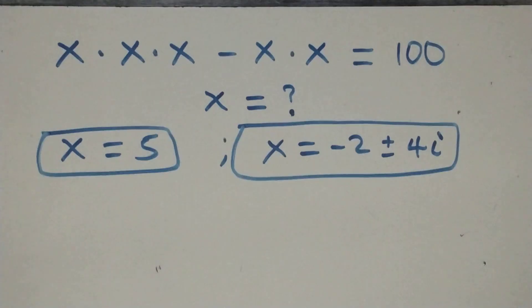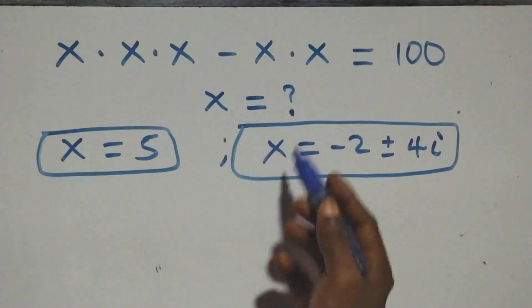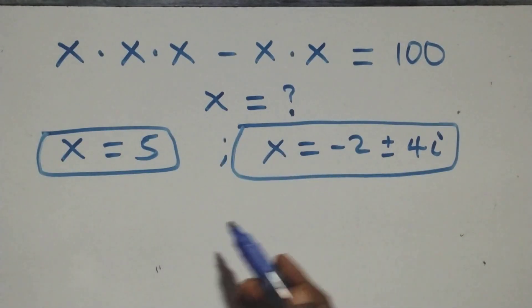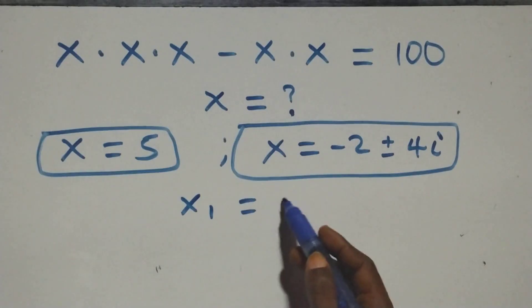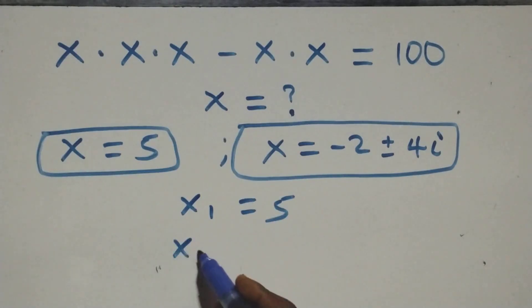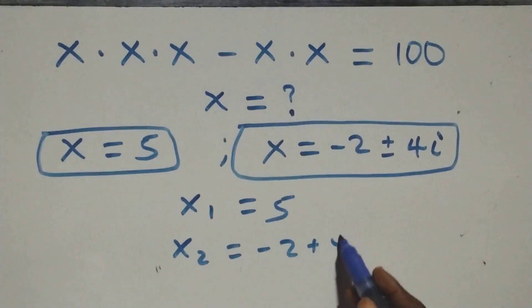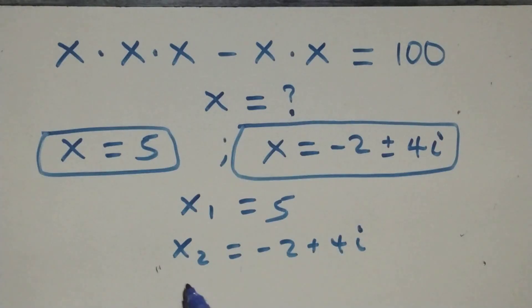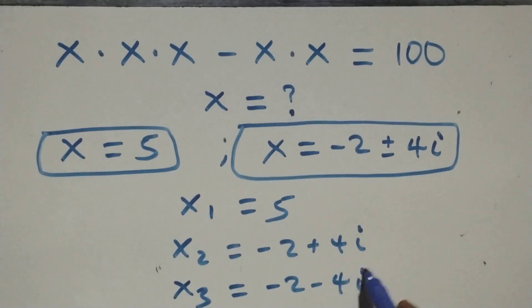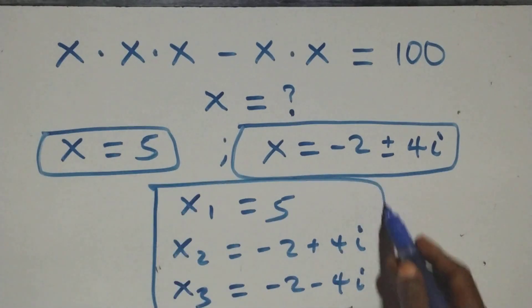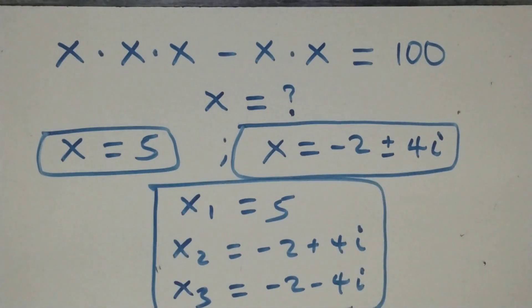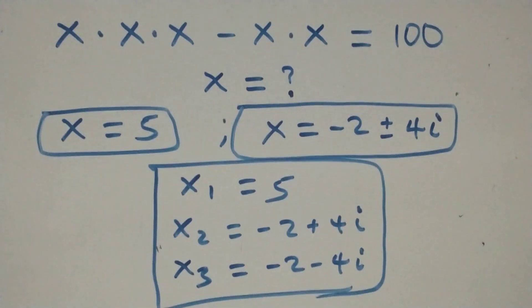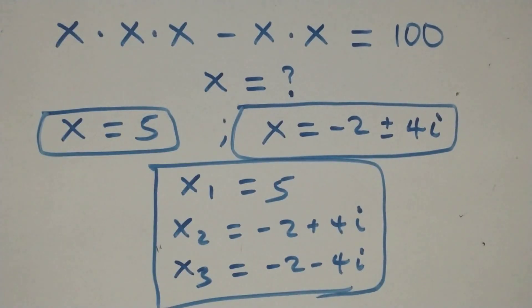Here we have two complex solutions, and therefore altogether we have three solutions in this problem — one real solution and two complex solutions. That is: x₁ equals to 5, x₂ equals to minus 2 plus 4i, then x₃ equals to minus 2 minus 4i. Three solutions together — one real, two complex. Thank you for watching, subscribe for more videos, share this video, give a thumbs up, and put your comments. See you next time, bye for now.